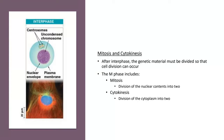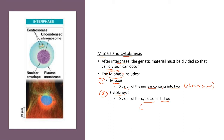Mitosis and cytokinesis occur after interphase. The genetic material must be divided so that cell division can occur — this is what happens in the S phase. The M phase includes two different phases: first, mitosis — the division of nuclear contents, mostly chromosomes, into two; and second, cytokinesis — the division of the cytoplasm as well as organelles into two, so we can make two cells.